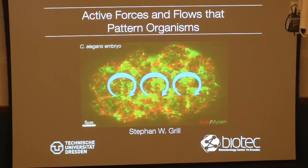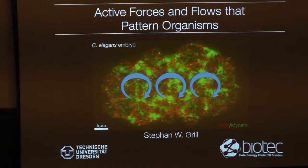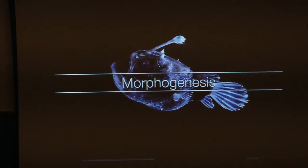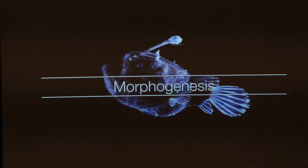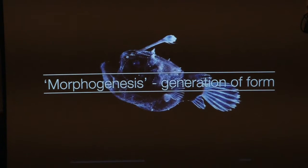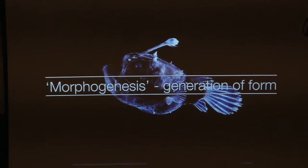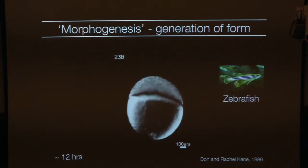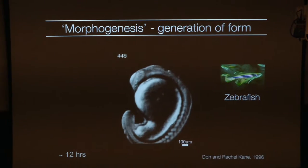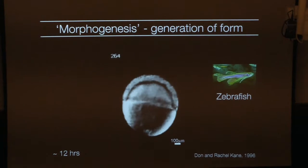Active forces and flows that pattern organisms is the title of the talk. The best way to start is with the general motivation: morphogenesis — how is it that nature is able to generate all these varieties of shapes and forms of organisms in early development? I'm showing you a football fish, which has a peculiar shape with this glowing antenna — it's the favorite animal of my little son. Here's another fish more familiar to you: zebrafish. Over the course of just twelve hours, this organism establishes its form.